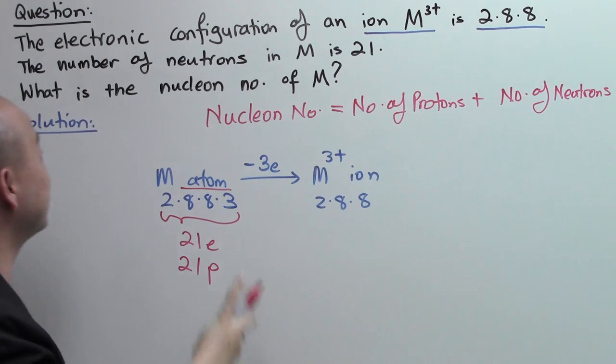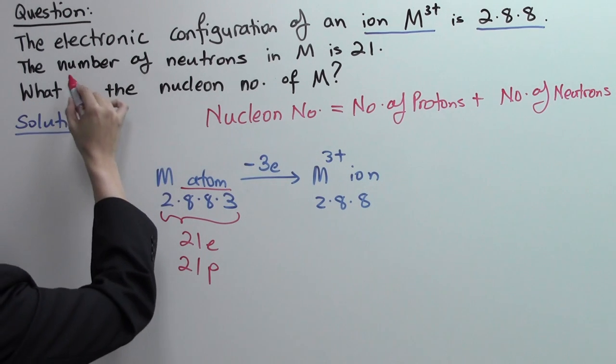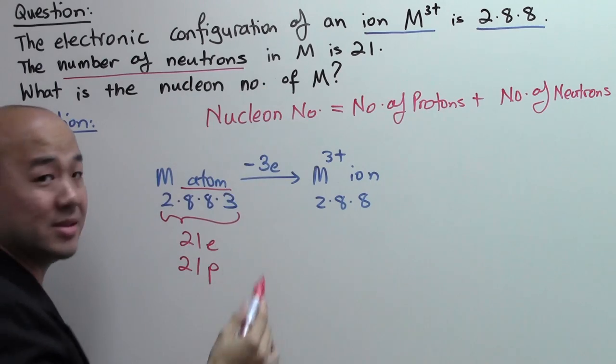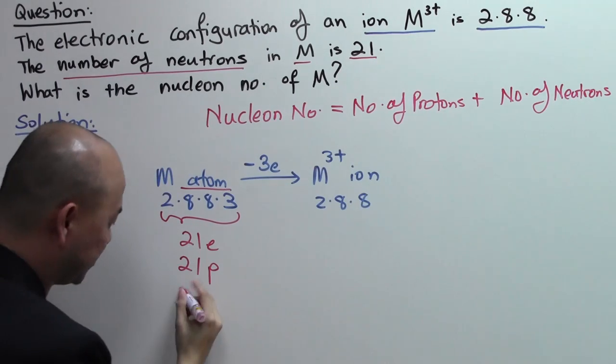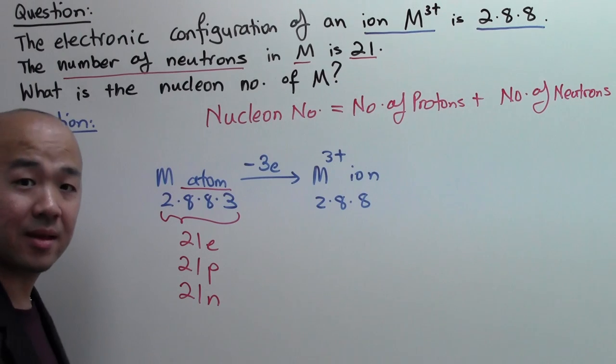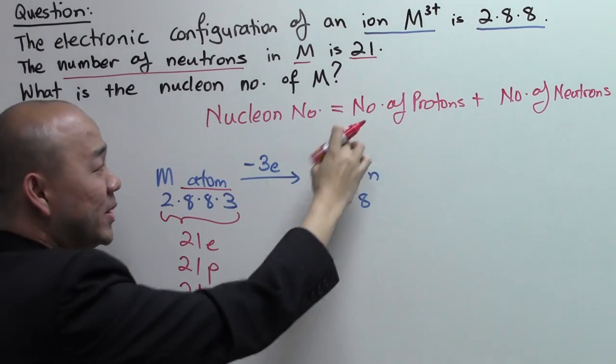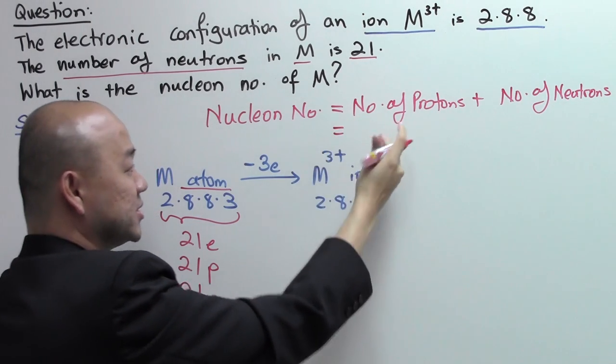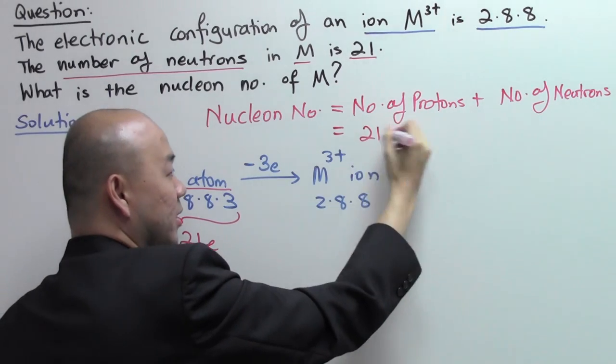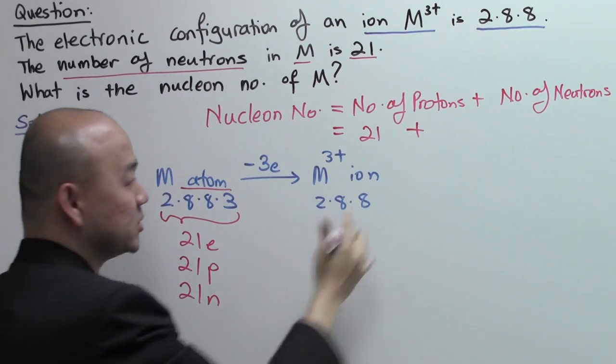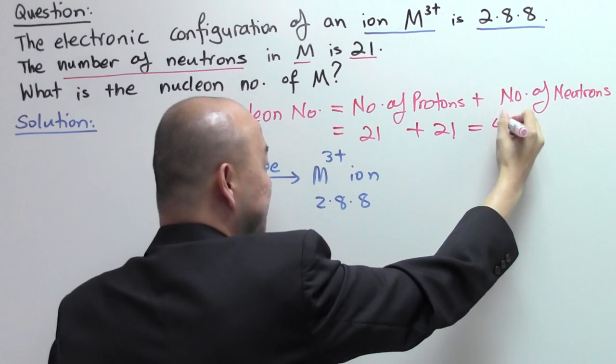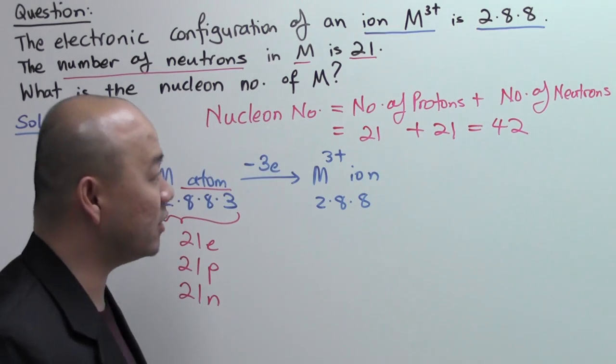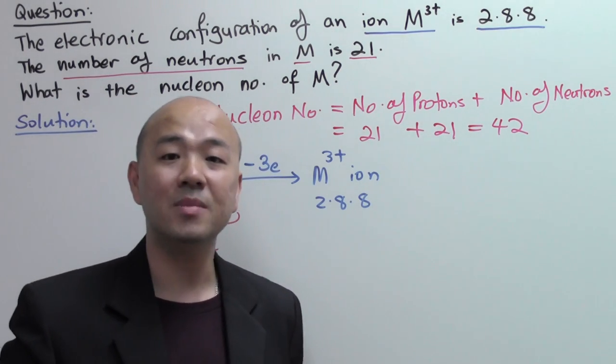Now, next, you need to find the other information which is given in the question. The number of neutrons in M is 21, which means it's 21 neutrons. So you go back to the formula. Nucleon number equals number of protons, 21, plus number of neutrons, which is 21. That gives you the nucleon number of 42 for M atom.